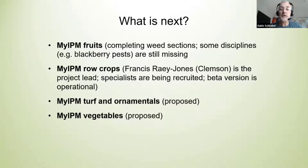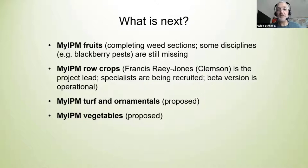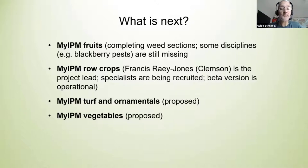Dr. Francis Wright Jones out of Clemson University is spearheading the MyIPM row crops app, which is now in the beta version stage. Specialists are being recruited to fill in the information — the coding is already there, the app is already in existence, and I think very soon it's going to be published. All they had to do is basically take the code, get the team in place, and feed the app with the relevant information. Also under discussion are a MyIPM version for turf and ornamentals, and I've been getting a lot of requests to implement a MyIPM for vegetables.